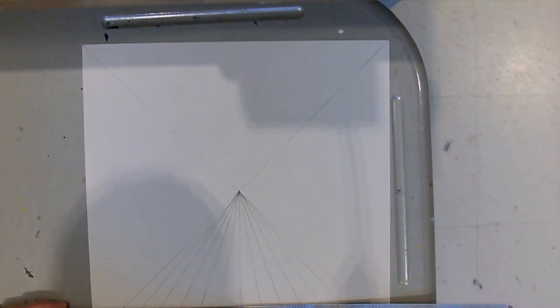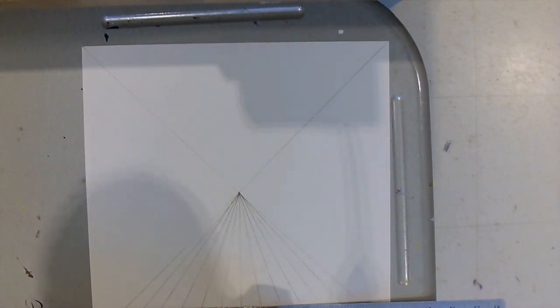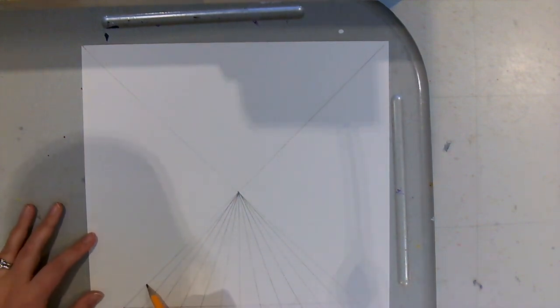We're then going to start by making the horizontal lines for the floor. You're going to start by lining up your ruler at the bottom of the paper so that the bottom of your ruler touches the bottom of the paper and then you're going to draw a line on the top of the ruler.